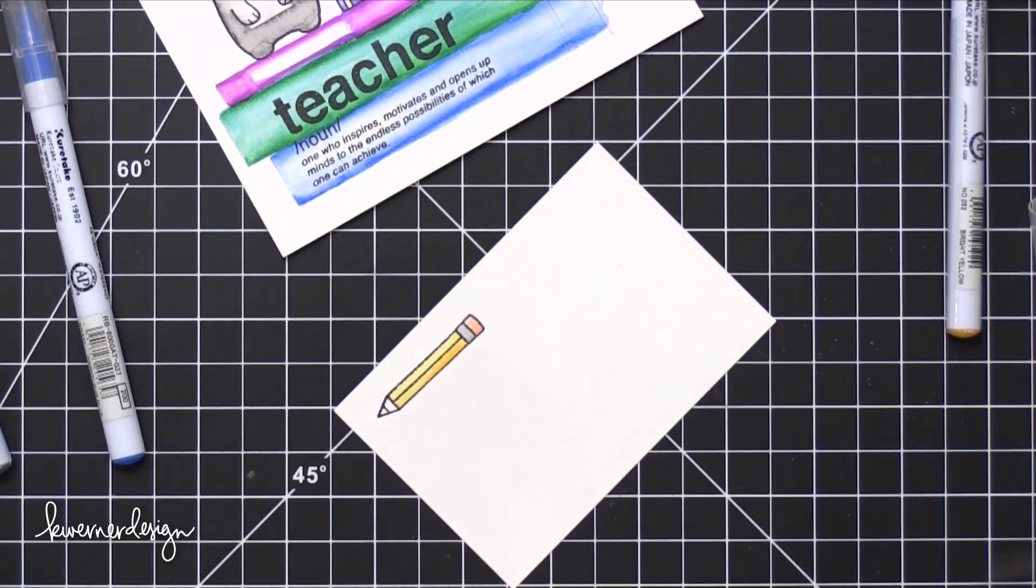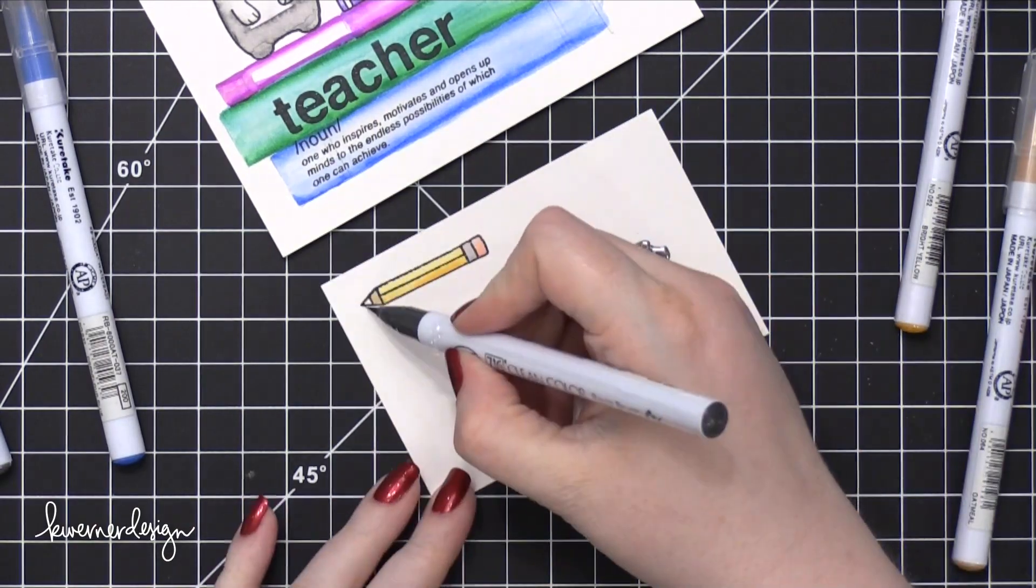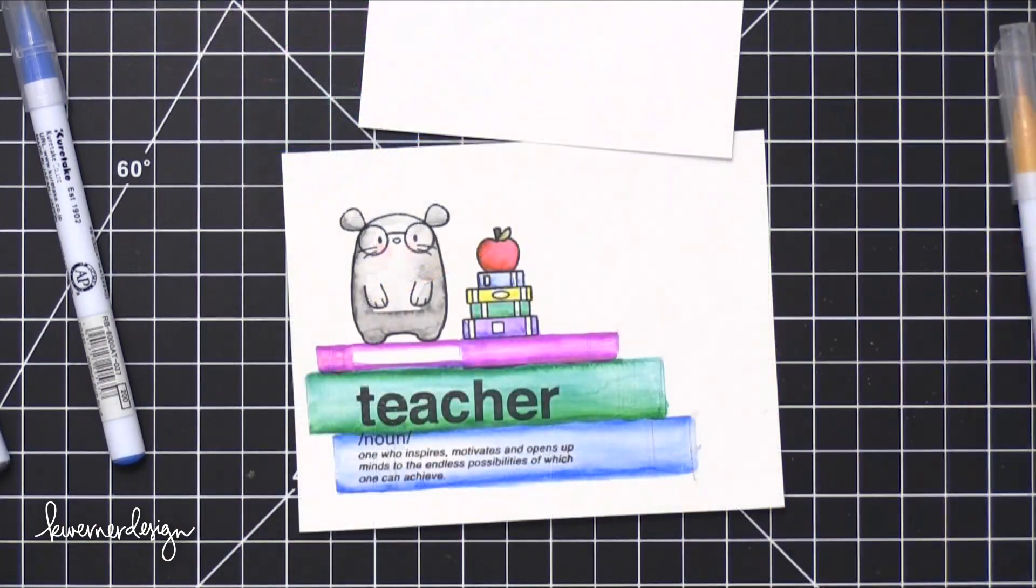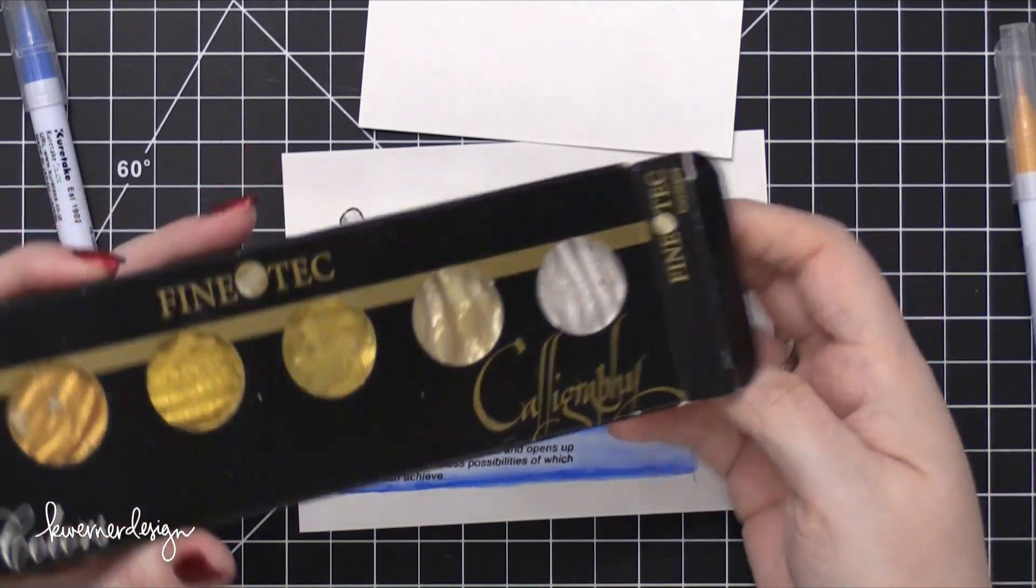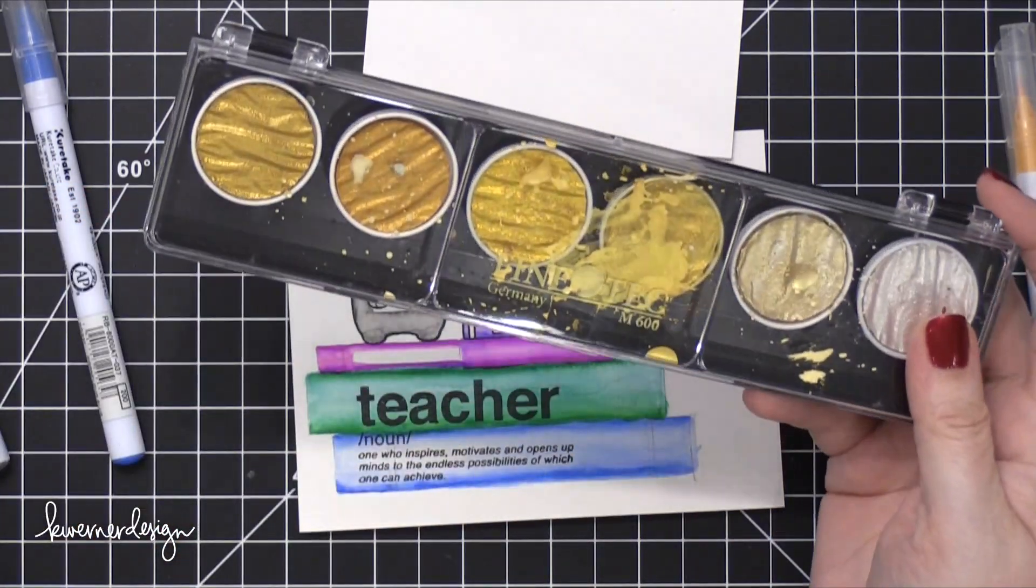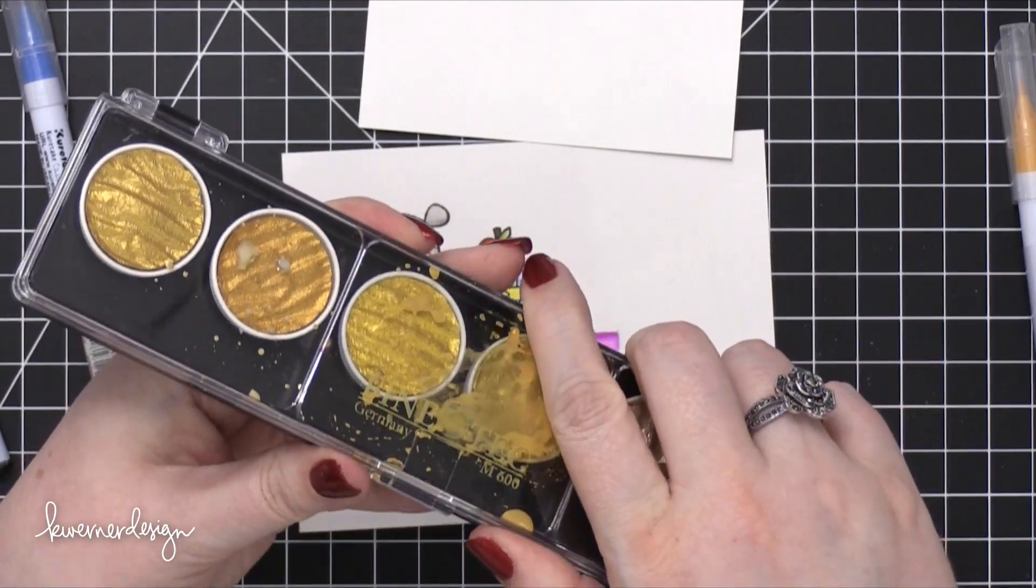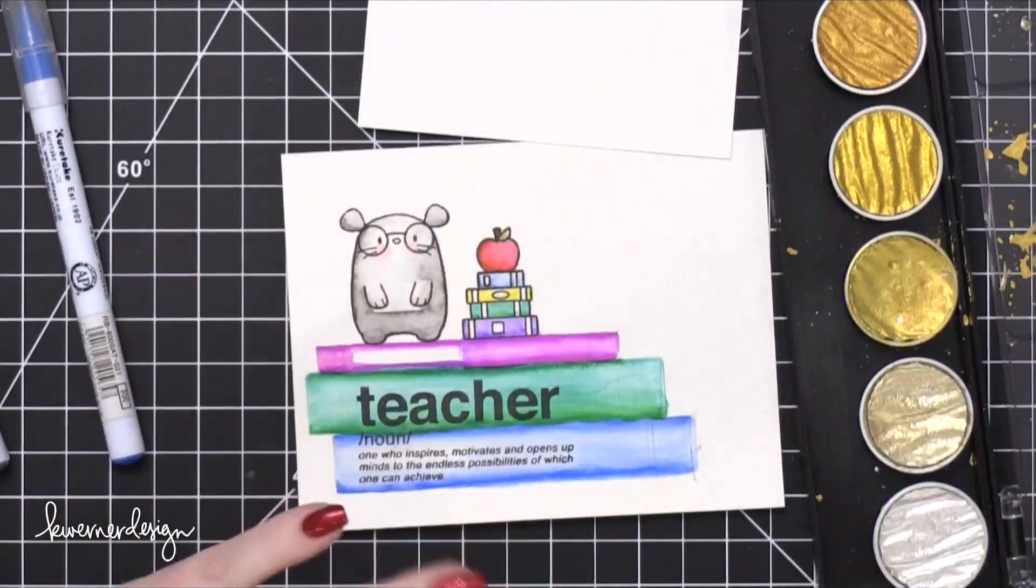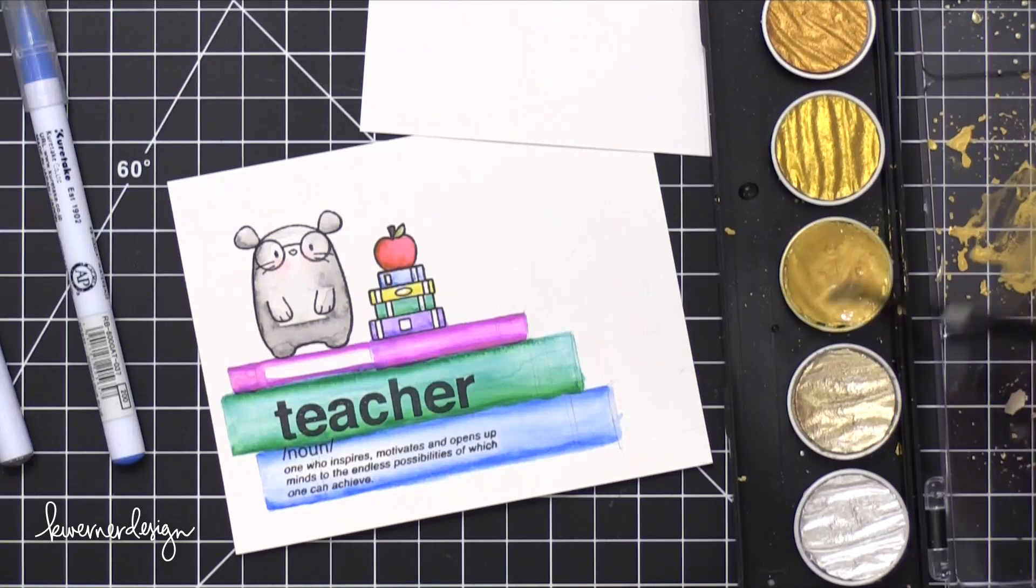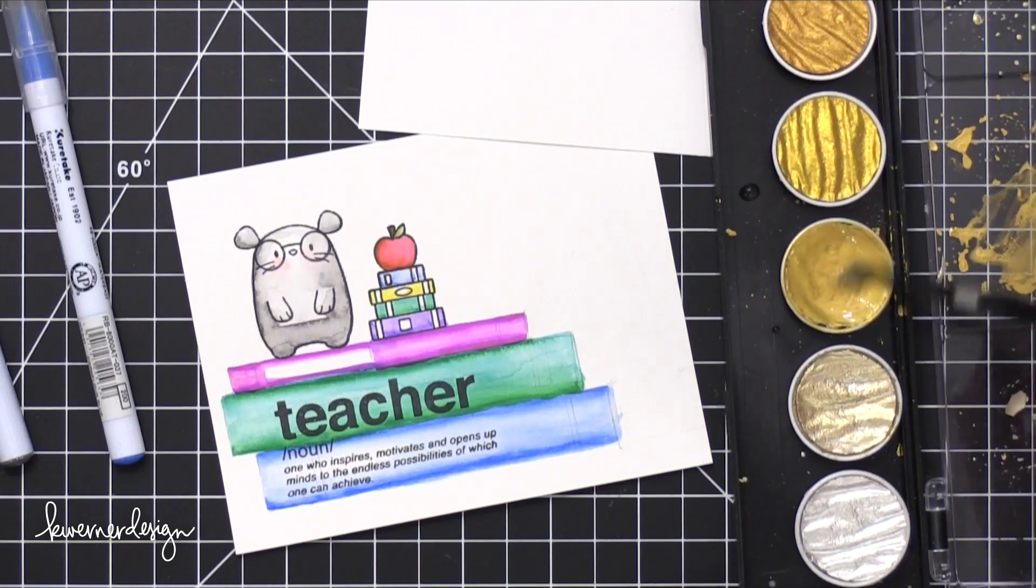This is going to be just a little pencil that slips underneath the mouse's arms. So I'm going to finish off the books with a little bit of gold watercolor. This is from Finetech, this is their Pearl Watercolors, the gold palette. And I'm going to use that fourth color down. It's kind of like my favorite gold. And I'll just use a regular paintbrush for this.